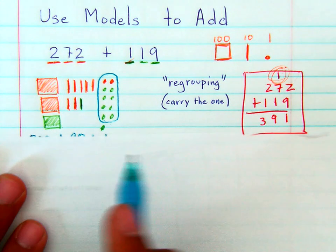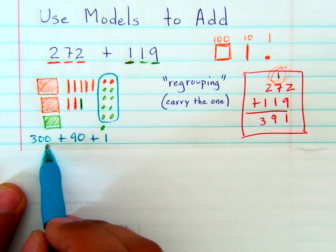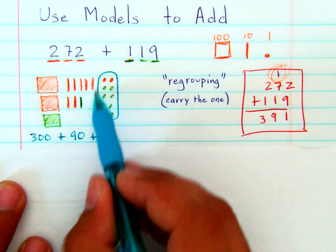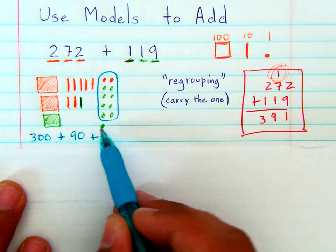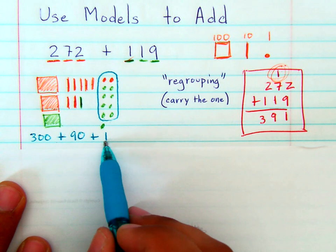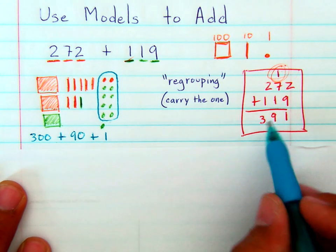So when you add all of these up, you know that you have 3 hundreds. You know that you have 1, 2, 3, 4, 5, 6, 7, 8, 9 tens, 90. And you have 1 unit left over. 300 plus 90 and 1. Hundreds plus tens plus ones is 391.